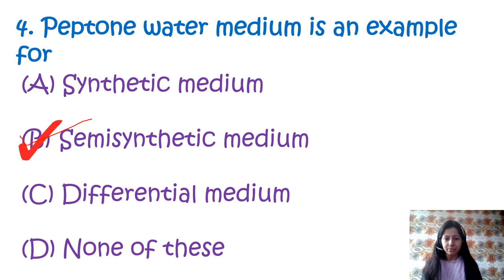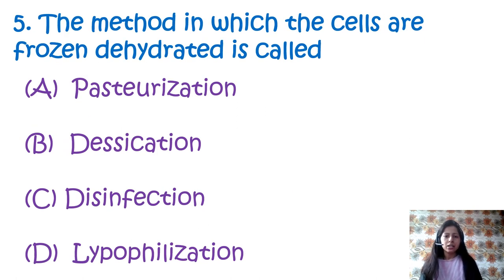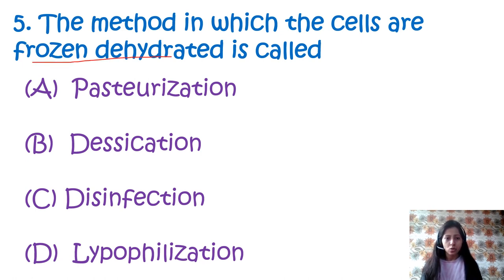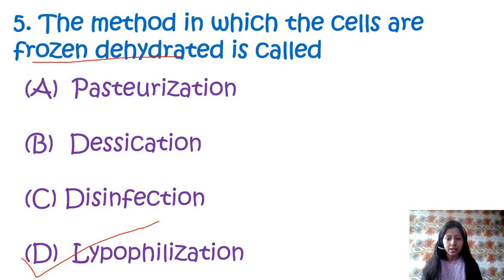Peptone water medium is an example of semi-synthetic medium — option number B. Question 5: The method in which the cells are frozen and dehydrated is called — option A: pasteurization, option B: desiccation, option C: disinfection, option D: lyophilization. The correct answer is option D, lyophilization, which is also known as freeze drying. It is a low temperature dehydration process which involves freezing the product, lowering pressure, then removing the ice by sublimation.